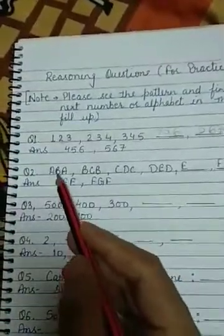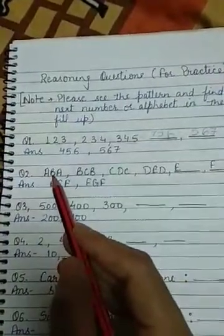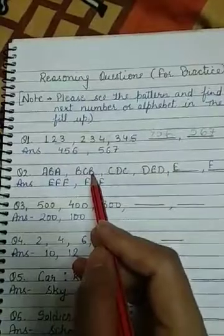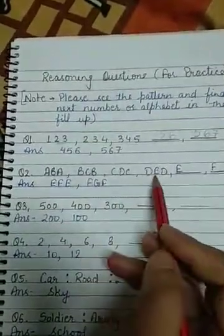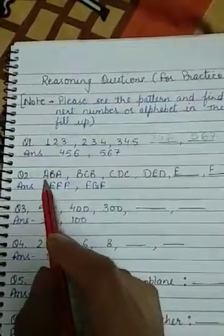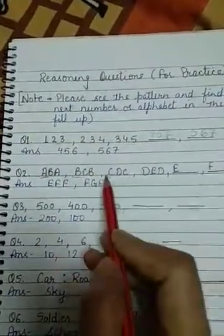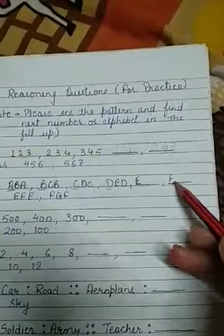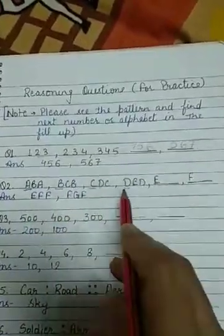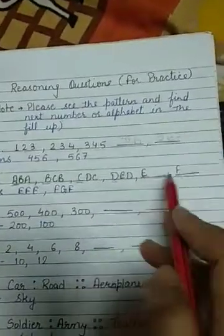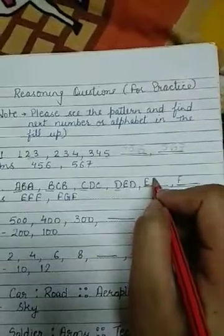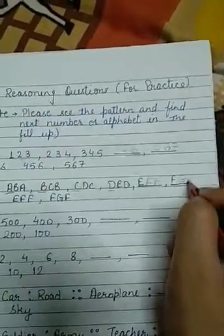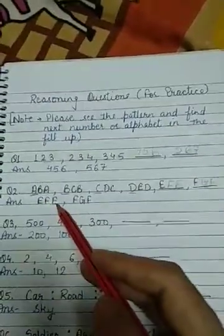Second question: A, B, A — then B, C, B — then C, D, C — then D, E, D. The pattern is: first alphabet, second alphabet, then the first alphabet is repeated. Also notice A, B, C, D progressing. So continuing: E, F, E — then F, G, F. You have to observe both patterns running simultaneously.